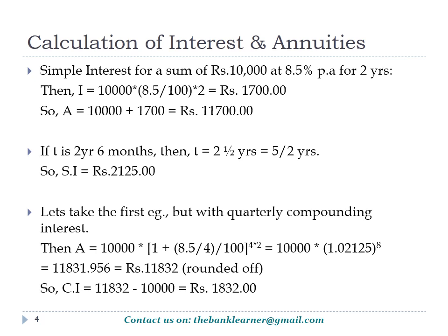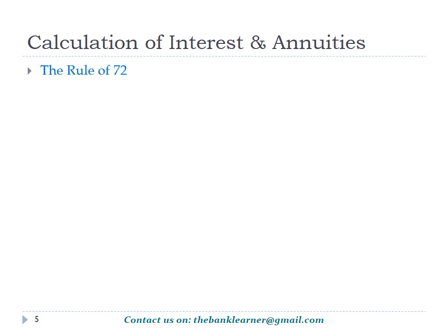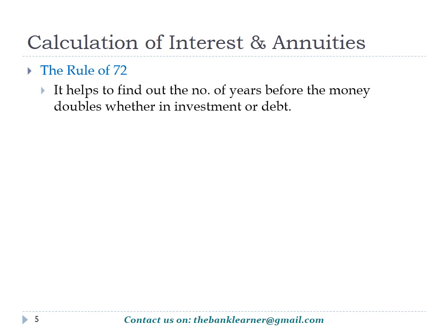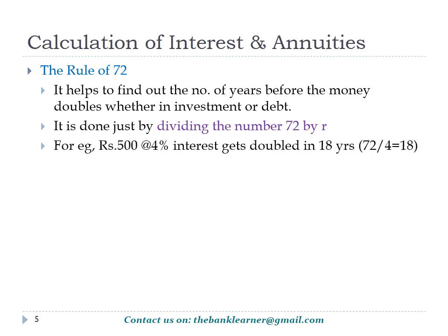The compound interest is the accumulated amount minus the principal, which equals 1832. The Rule of 72 helps to determine when money gets doubled, whether in investment or debt. It is calculated by dividing 72 by R, where R is the percentage interest rate. For example, if Rs. 500 is deposited in a savings account earning 4% interest, the time taken for it to double to Rs. 1000 is 18 years, as 72 ÷ 4 = 18.